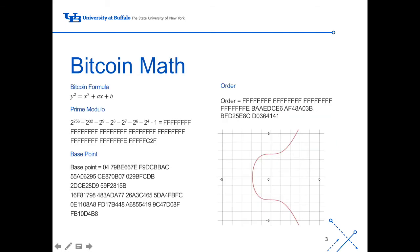Next, we have Bitcoin math. Bitcoin math is largely in-depth and very complex. The formula for Bitcoin is as follows: Y squared equals X cubed plus AX plus B. The value for A is defined as 0 and the value for B is defined as 7. The graph at right is representative of what that function would look like. Next, we have the prime modulo. The prime modulo for Bitcoin is written in all hexadecimal, hence all the amount of Fs. These are numbers, not letters, of course. The base point for Bitcoin is also written in hexadecimal. Although there are many letters, once again, they do represent numbers.